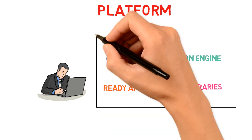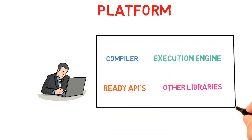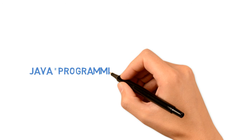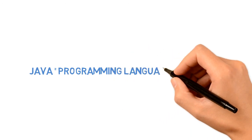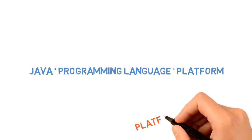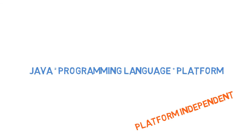Since Java provides tools and data to build apps, it is also known as a platform. So next time when someone asks you what is Java, remember it is a programming language and a platform. The other terms such as platform-independent, object-oriented, etc. are just its features, and we'll look at them in further videos.